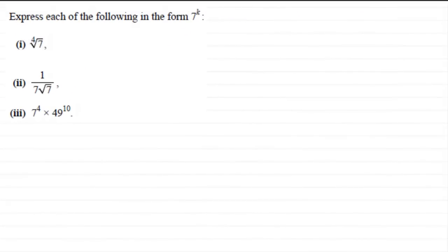Hi. Now in this example we've got to express each of the following in the form 7 to the power k. We've got in the first one here the fourth root of 7, and then we've got 1 divided by 7 root 7. And in the third one, 7 to the power 4 times 49 to the power 10.